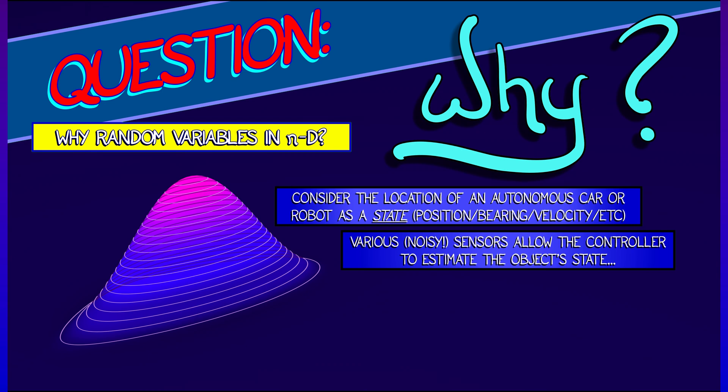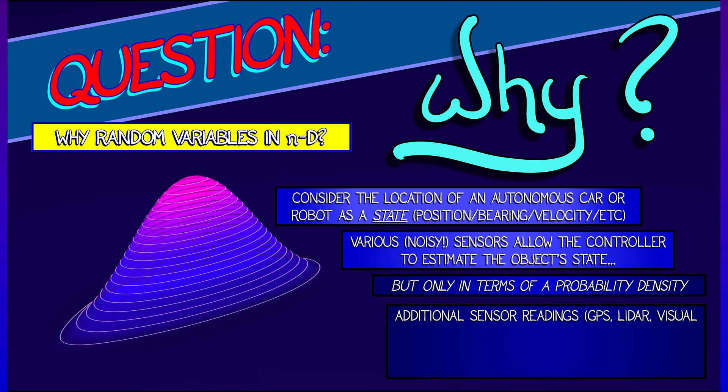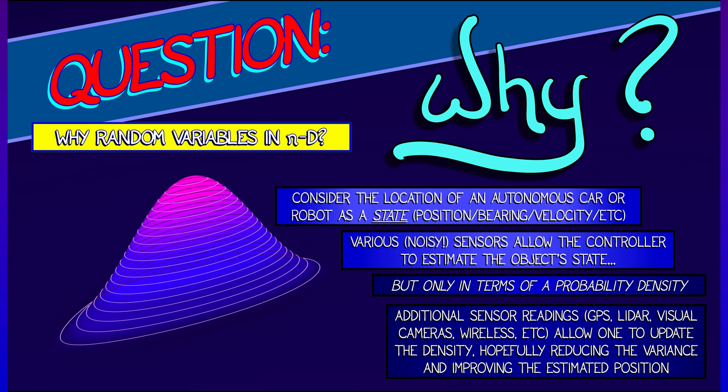...you might get that information from a variety of different sensors, but those sensors are noisy. They have some uncertainty, so you don't know exactly what your state is, but you do know a probability density, and you might be able to characterize the uncertainty of your estimate in terms of the variance. You might be able to improve the uncertainty by getting more sensor readings.